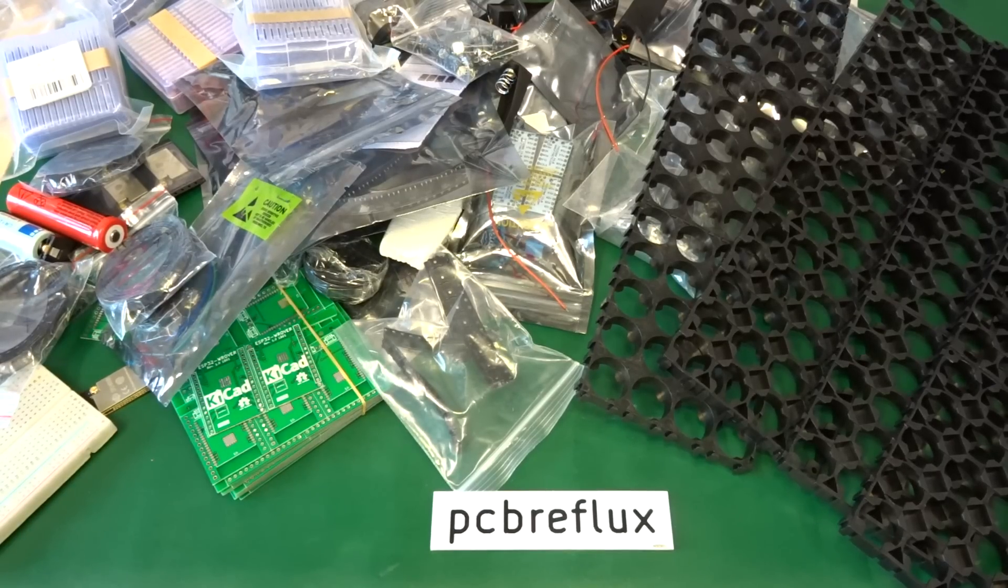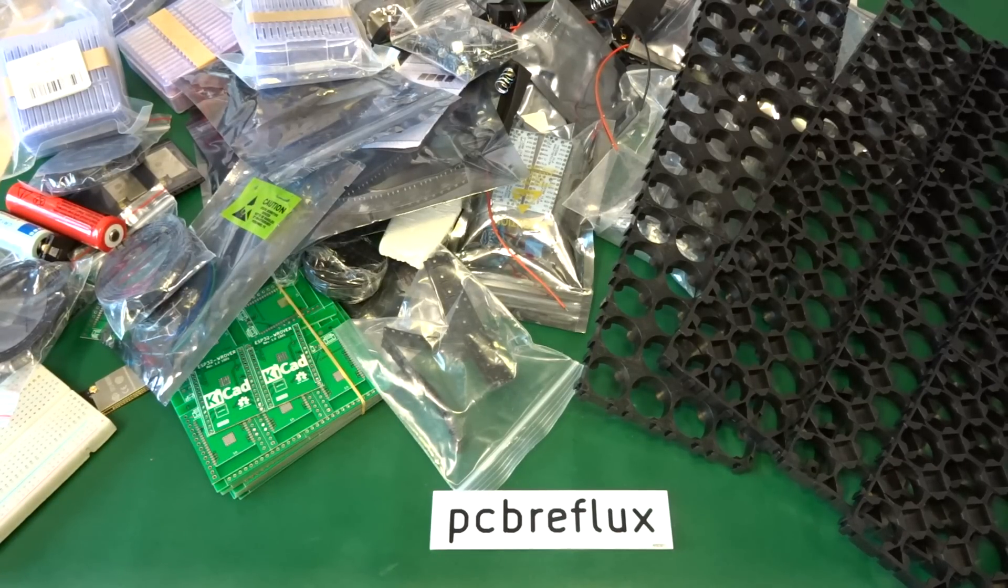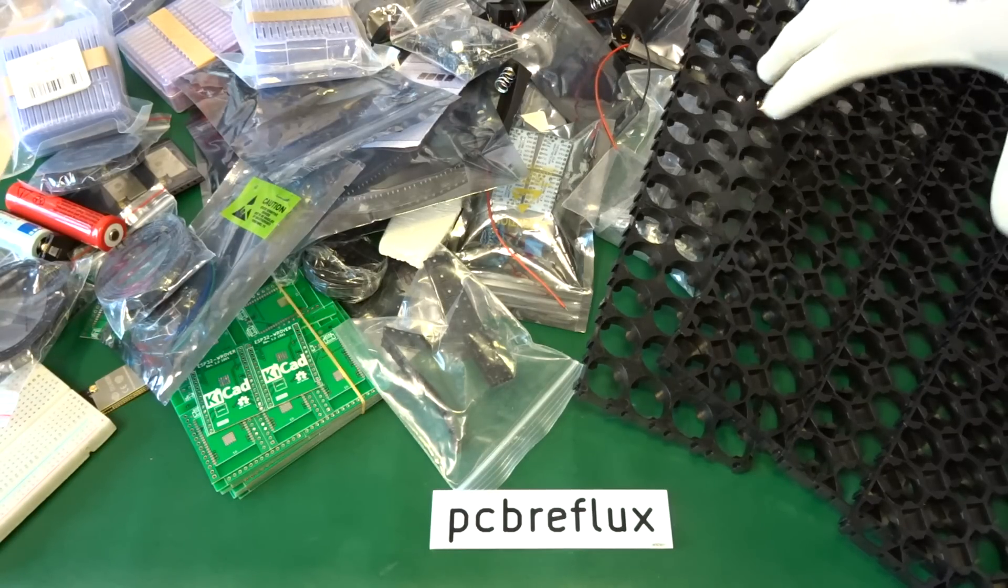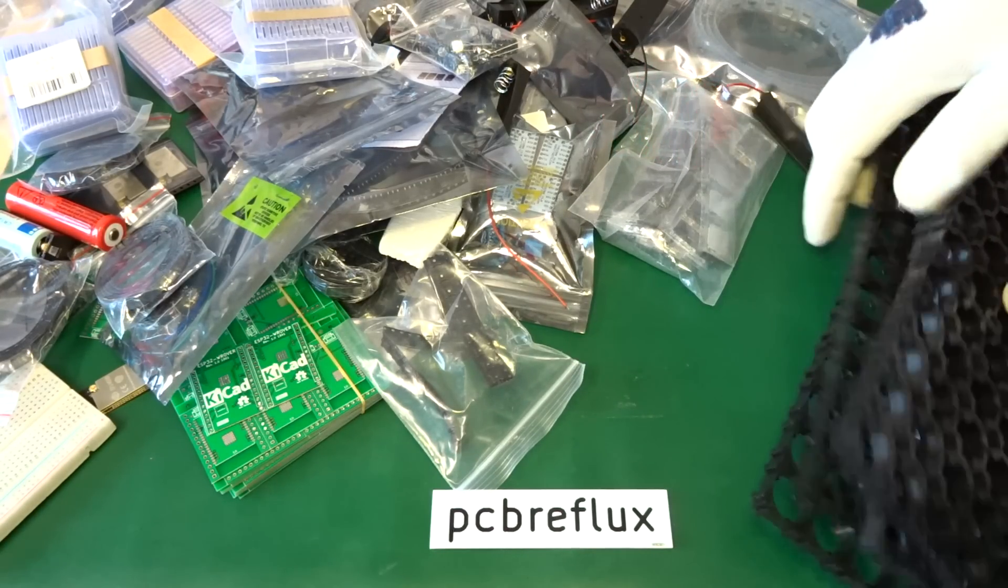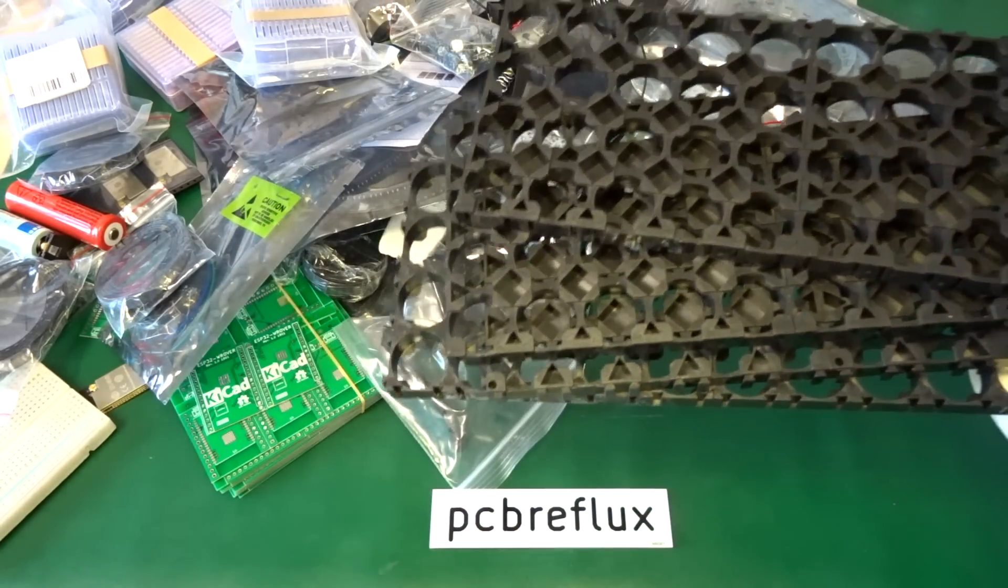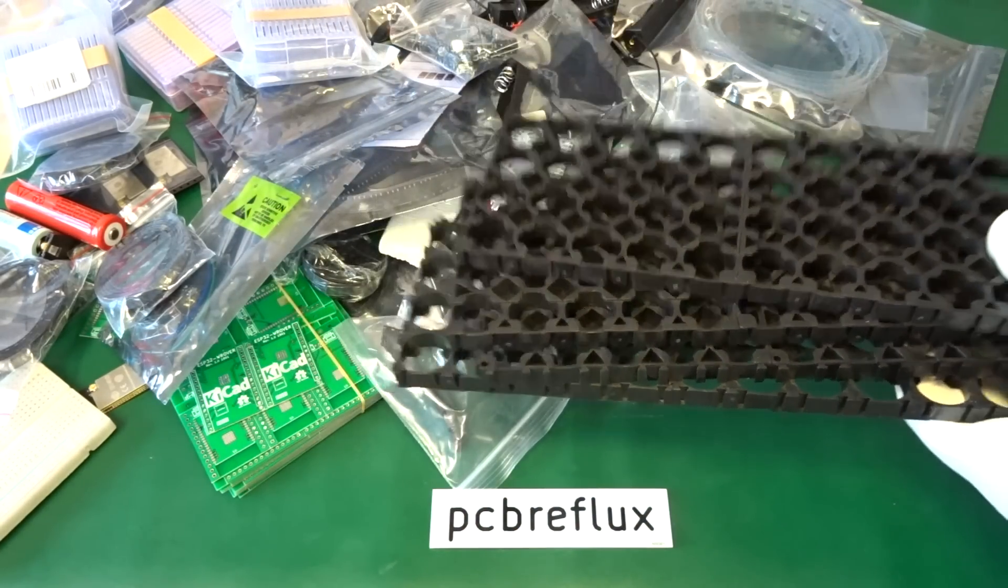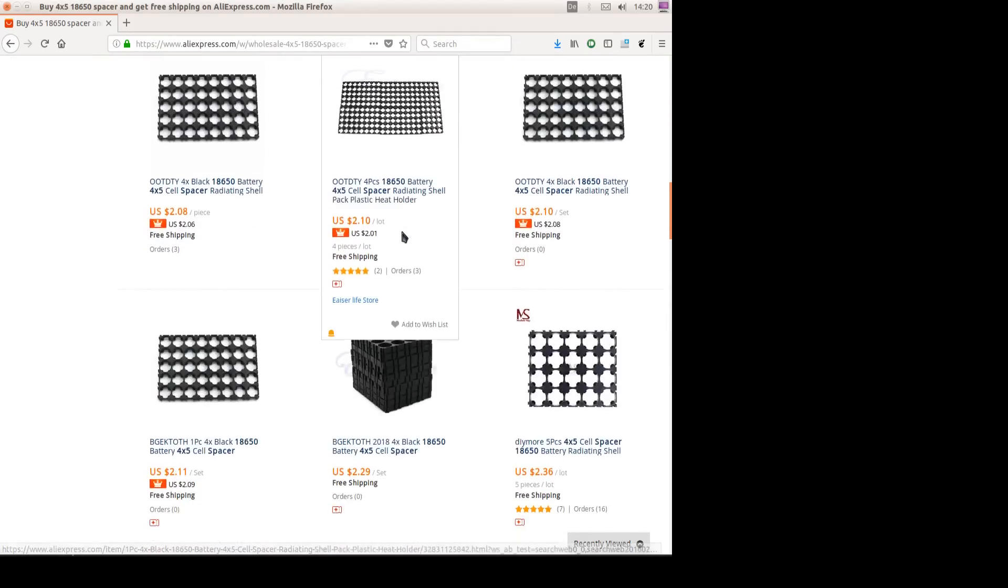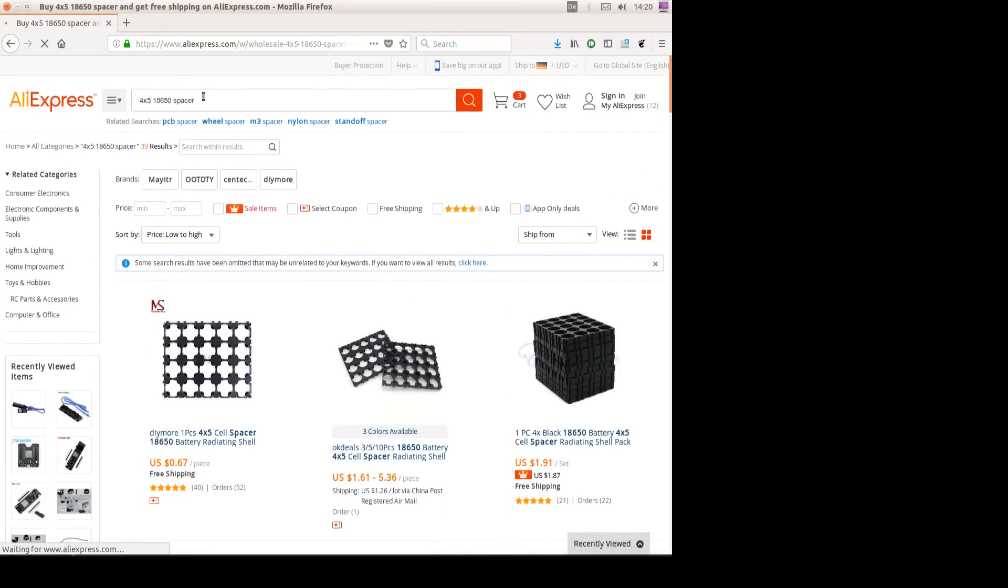Hi, today I show you what's on my bench. I start with a Powerwall project for the ESP32. For this, I bought some 18650 cell spacers from AliExpress, and I show you the link.